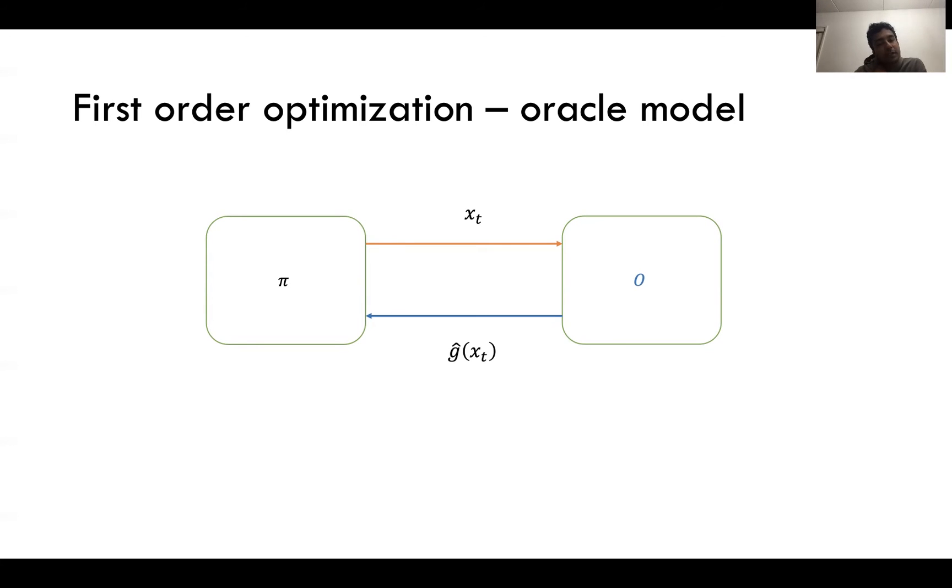What we want to study today is first order optimization with information constraints. These will be the settings in which you do not have direct access to ĝ of x_t. For example, think of many different machines and in each round you are going to query one of the machines. So x_t will be queried to the t-th machine and then it has to send back the gradient and due to several reasons such as communication constraints you cannot observe the precise gradient estimate and only a small amount of information about the gradient can be passed back from the machines to you.